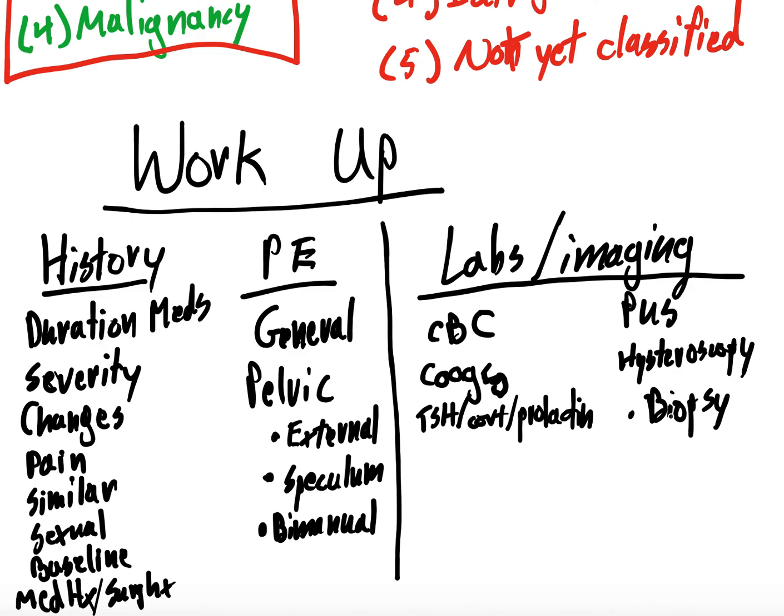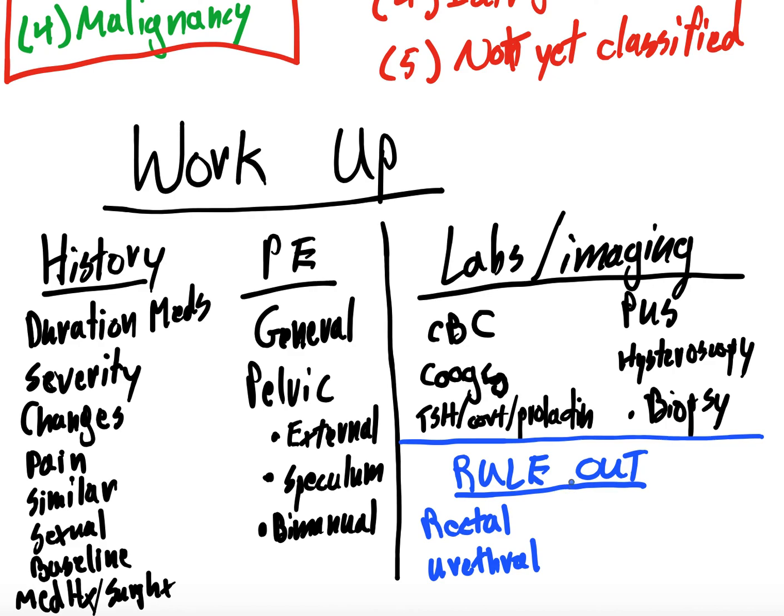So I do just want to say one more point, anchoring on abnormal uterine bleeding. You don't want to do that until you rule out, right? So you want to rule out rectal causes, so do a hemoccult, urethral causes. Do they actually have a urethral AV malformation causing bleeding, vaginal canal causes, right? Do they have a laceration in their, vaginal canal that is bleeding, and then cervical causes something similar because you have to rule out all these before you can say that the causes uterine. Oh, okay.